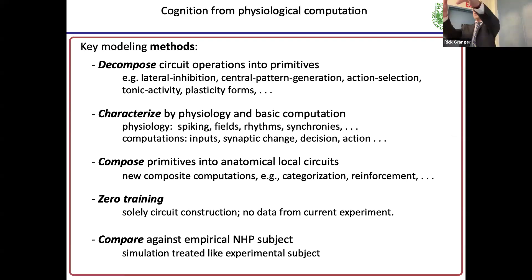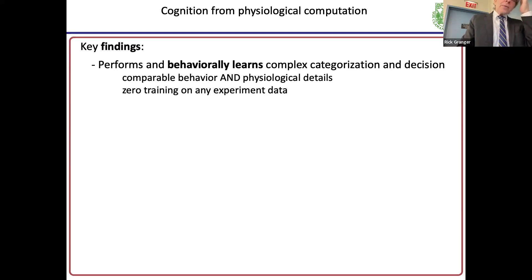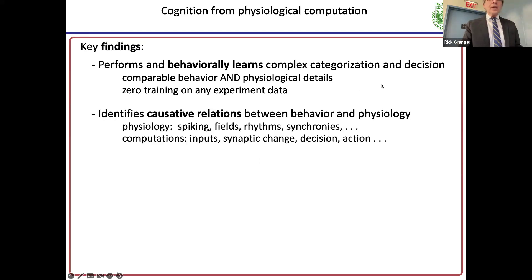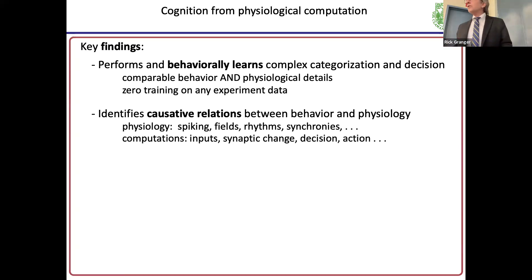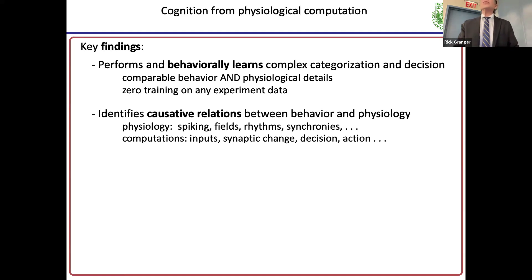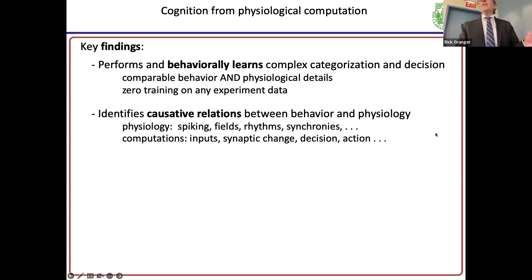Key findings: the model learns — I wouldn't be here if it didn't — and it's doing these complex decision-making tasks, doing internal categorization all through synaptic plasticity. By looking at it we can identify causative relations — I always say that with trepidation, because there's nothing more squirrelly than causation in brain circuits. In this case we're able to literally investigate cell by cell, spike by spike, what the simulation was actually doing. So we're only talking about causation in the model, not necessarily in the non-human primate.